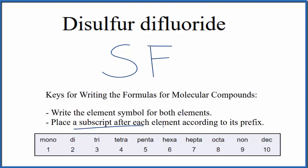Next, we'll place a subscript after each element according to its prefix. So when we look at sulfur, we have di in front of sulfur. Di, that's two. So we'll put a two after the S.